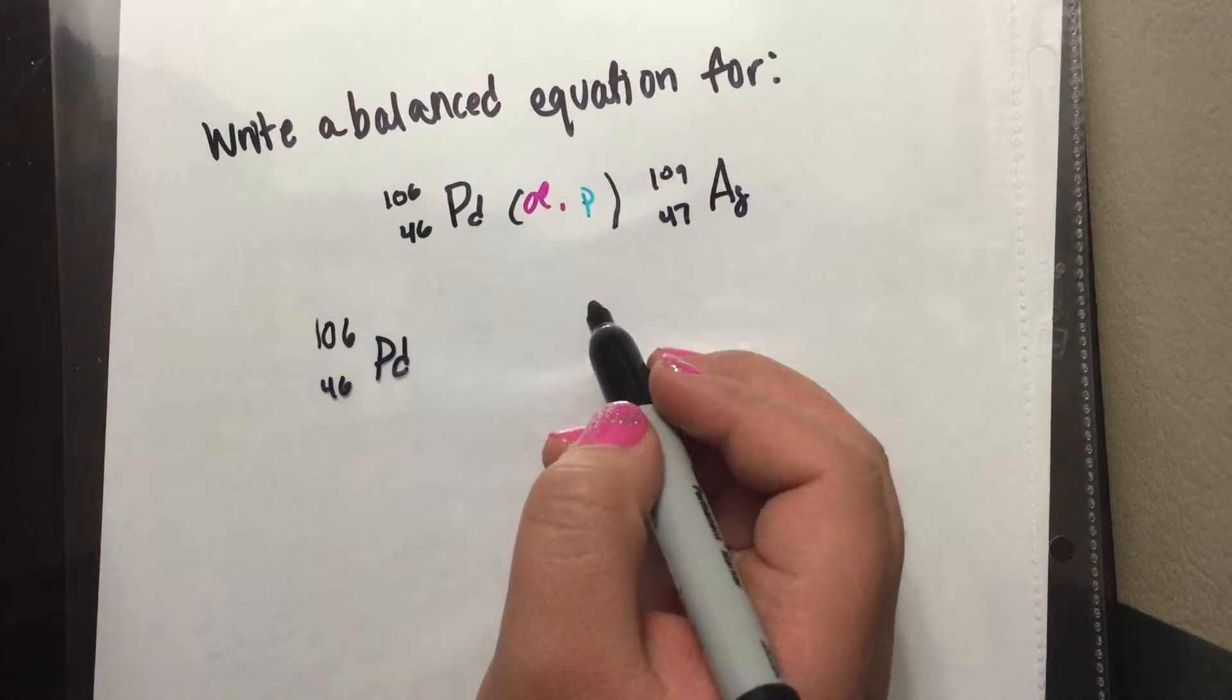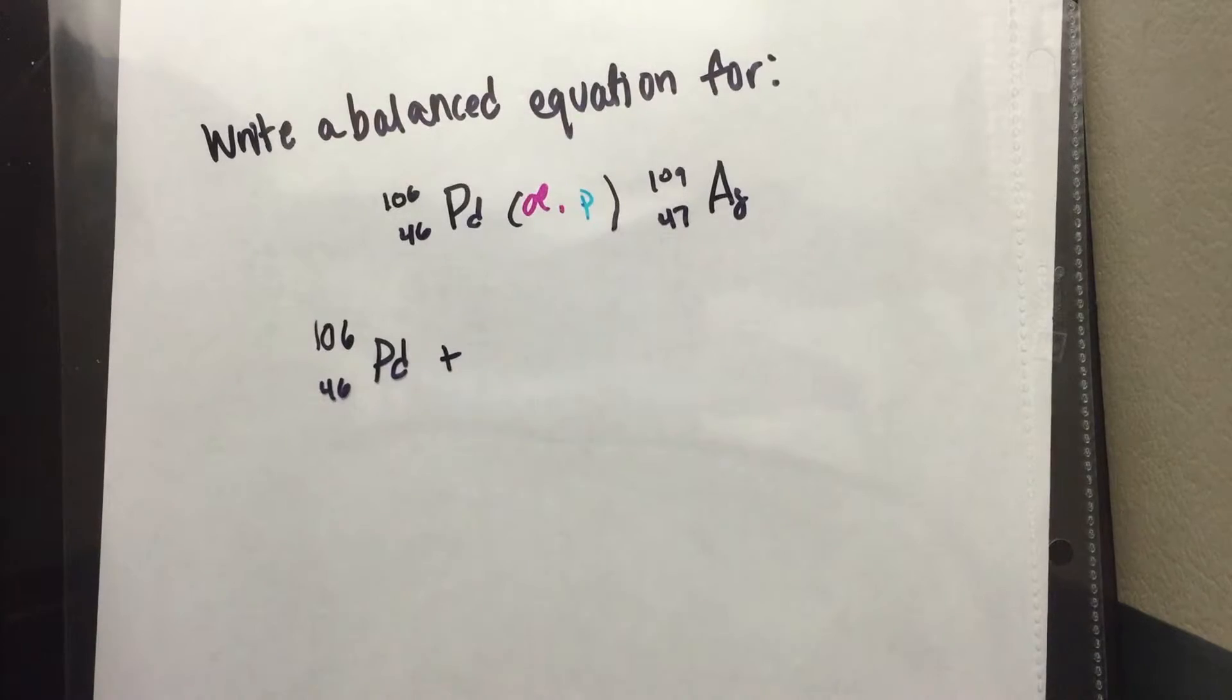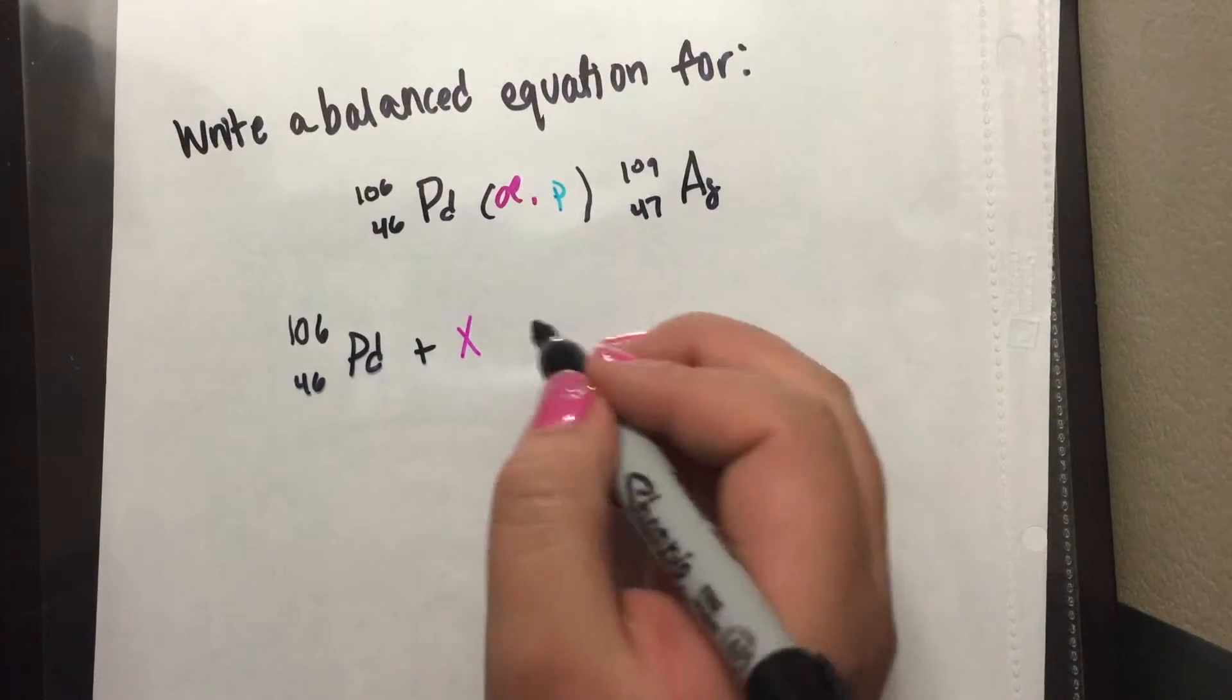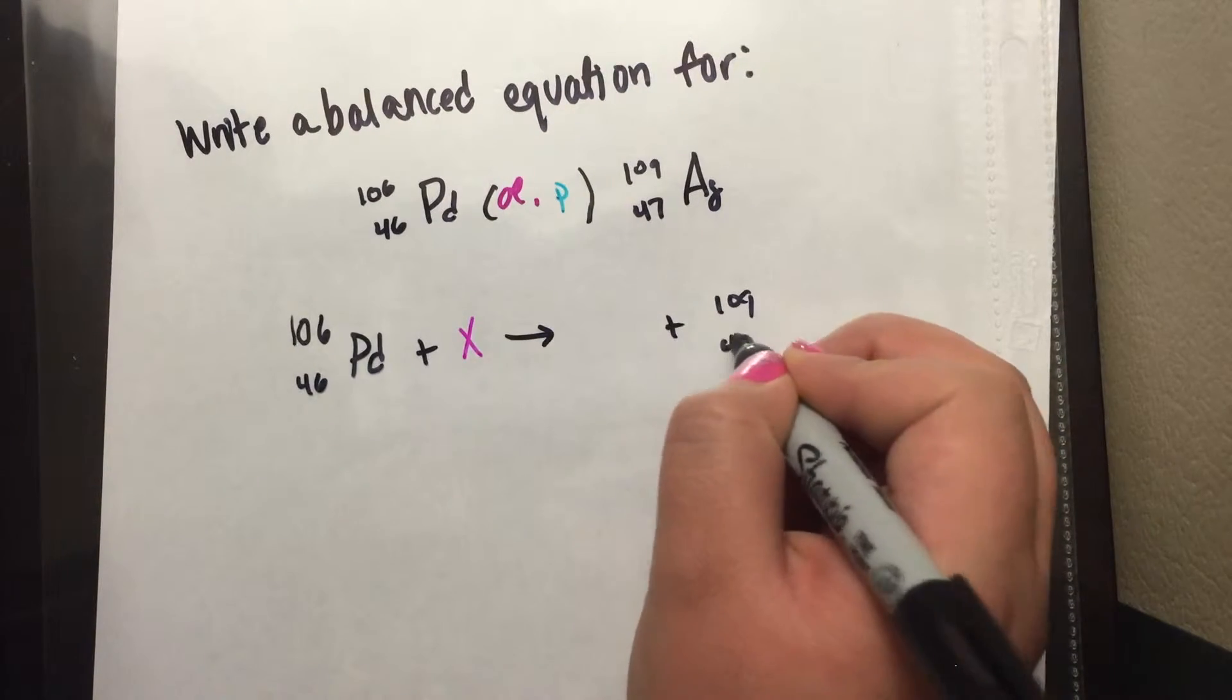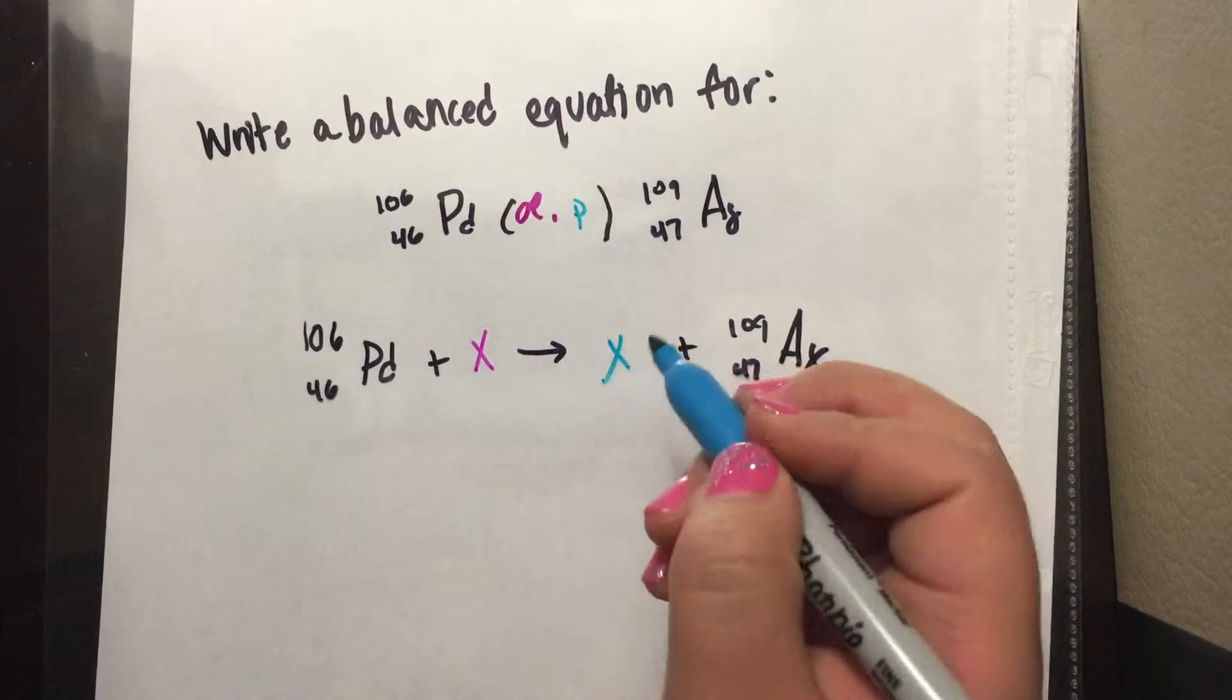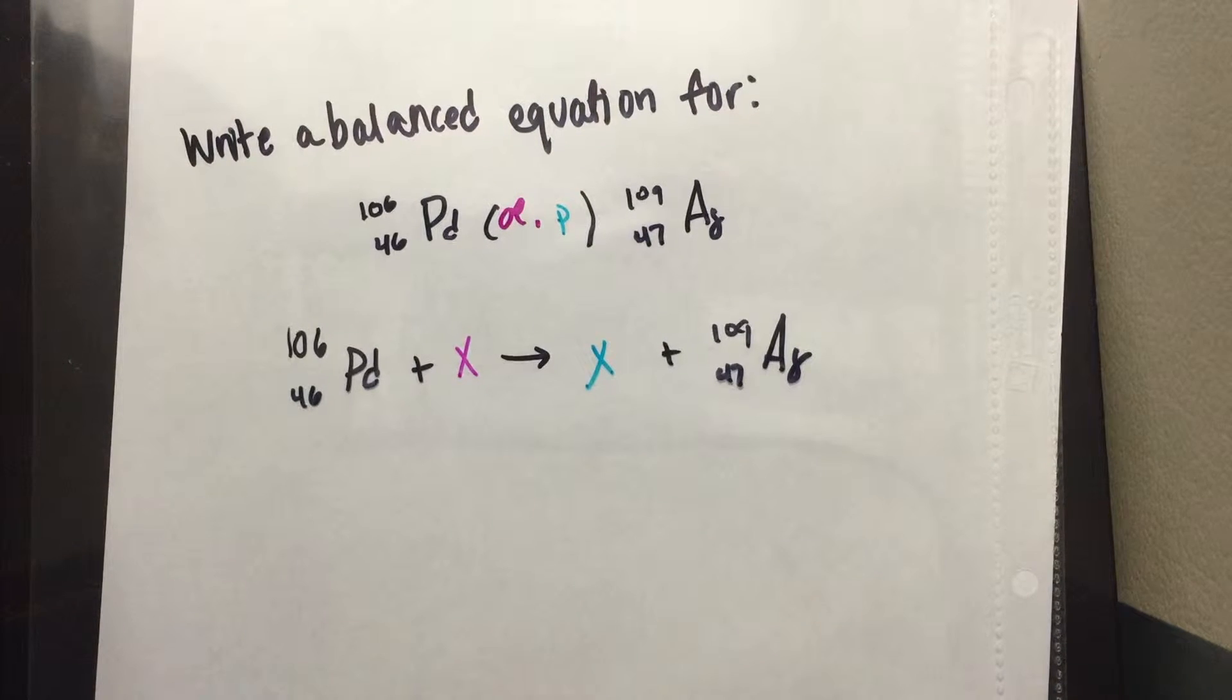So first we'll go ahead and write our given. We know that we have to find the alpha and P. So we'll just write it as X and we'll write the given and our X. And what we're trying to find is our X, the alpha and the P.